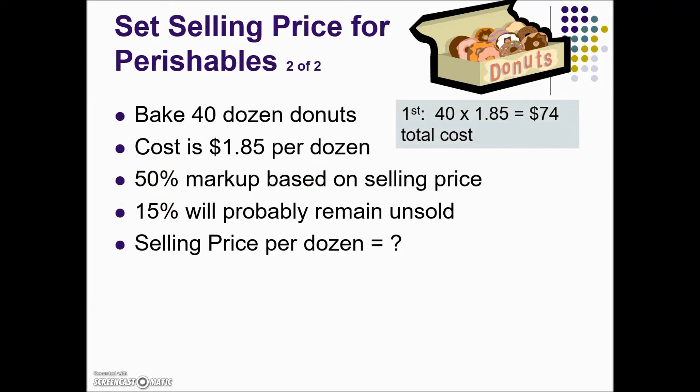The first step is to find the total cost for making these donuts. There are 40 dozen donuts and the cost is $1.85 per dozen, so we multiply 40 times $1.85 — their investment is $74 just to make the donuts.